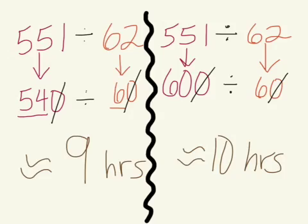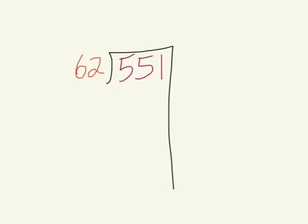Those are a couple of ways to estimate, so that when we solve the real problem we can ask ourselves 'does this make sense?' So let's solve this problem for real. Our estimates are 9 and 10. In previous years you might have called this hangman division — that is slang. We are not using math slang. This is going to be the partial quotients method.